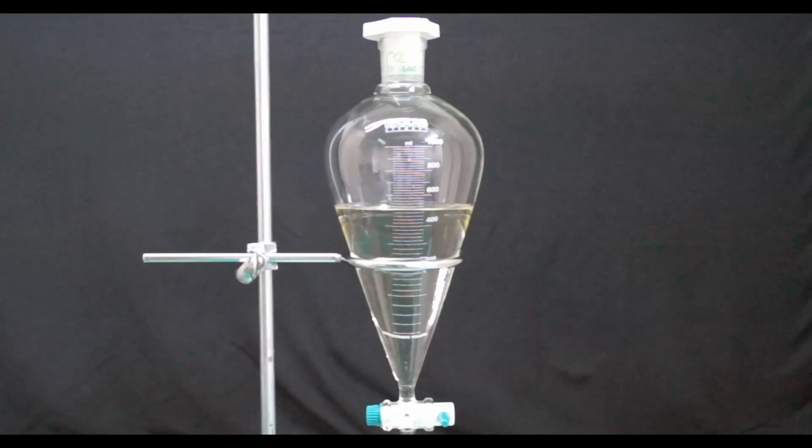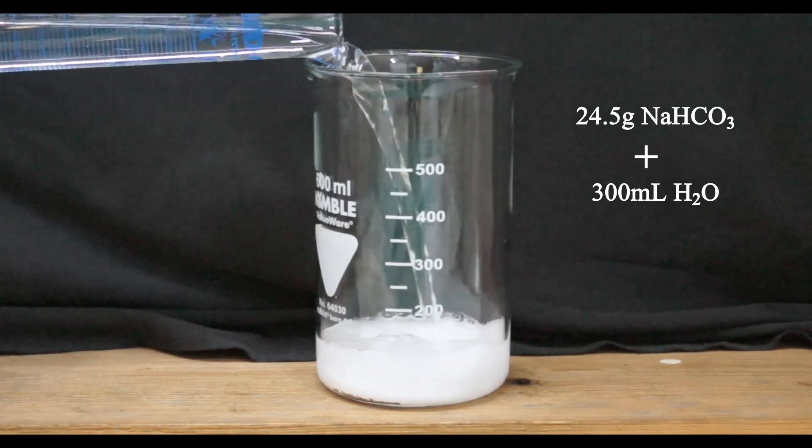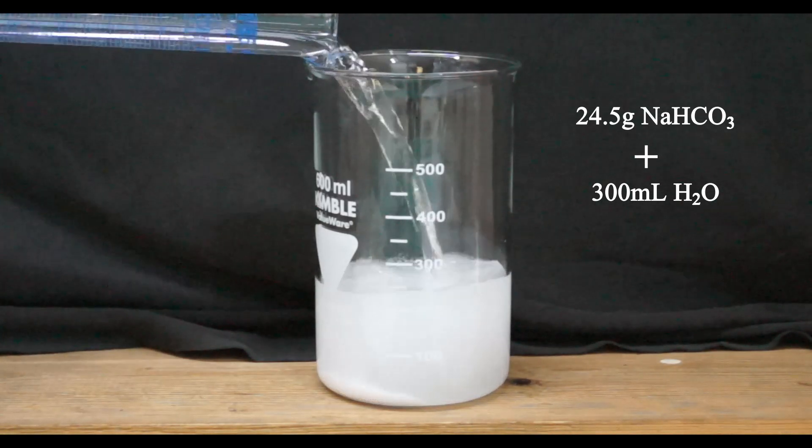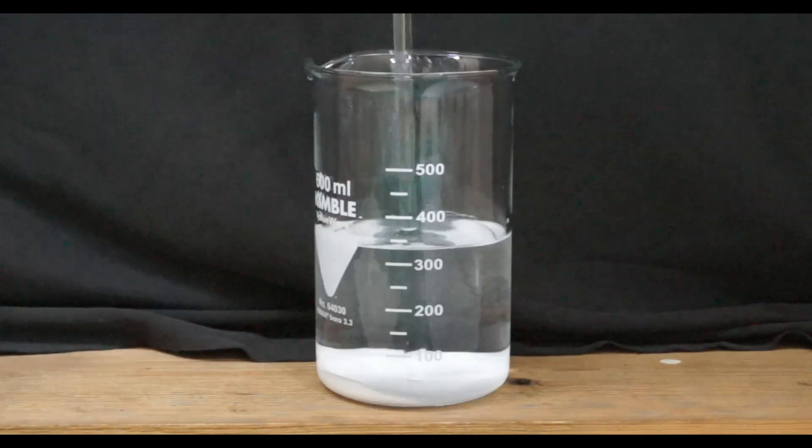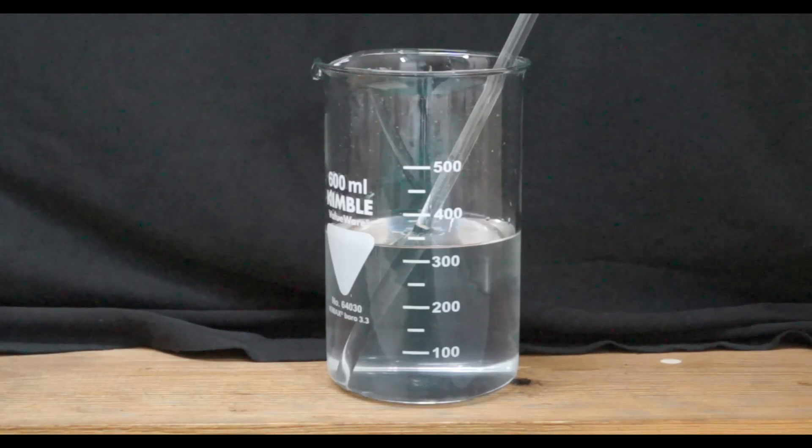After charging the crude products to the one liter separatory funnel I prepared the solution of 24.5 grams of sodium bicarbonate in 300 milliliters of water. After some stirring I obtained a clear solution of sodium bicarbonate.